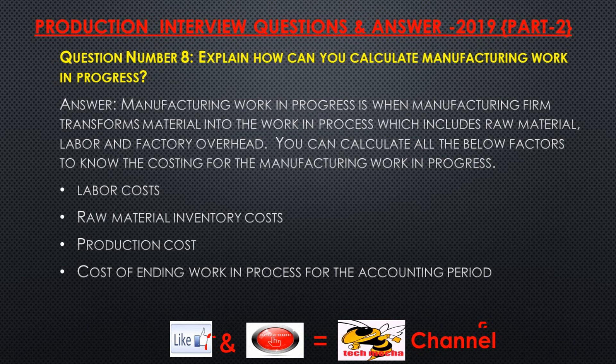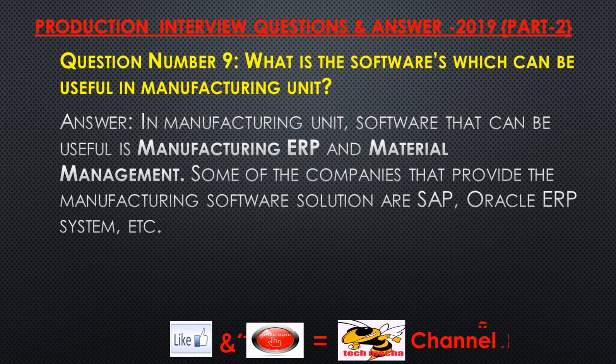Question number eight: Explain how you can calculate manufacturing work in progress. Answer: Manufacturing work in progress is when a manufacturing firm transforms material into work in process, which includes raw material, labor, and factory overhead. You calculate labor costs, raw material inventory costs, production costs, and the cost of ending work in process for the accounting period.